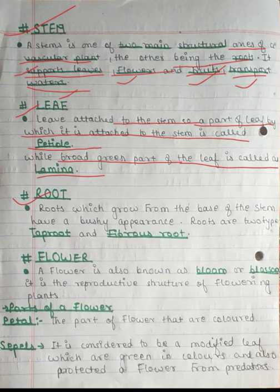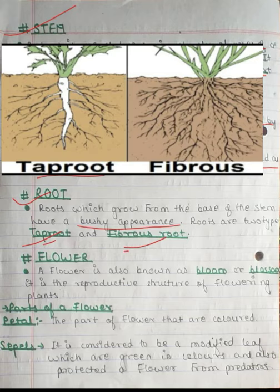Now we will talk about the root. Roots grow from the base of the stem and have a bushy appearance. Roots are mainly of two types: tap root and fibrous root. Our roots are under the ground and have a bushy appearance.